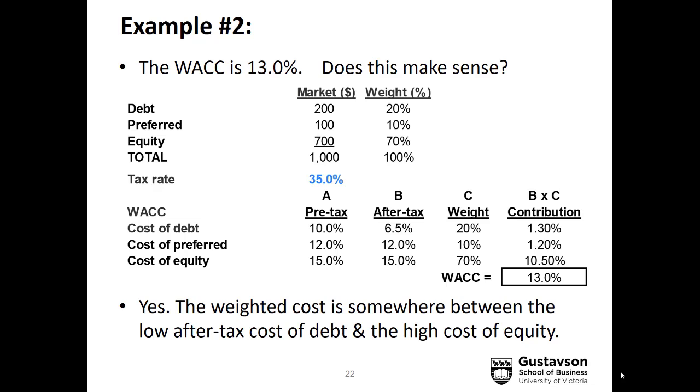Just remember: the WACC is forward-looking, based on market weights, using the marginal tax rate. Use the formula, and you won't go wrong.